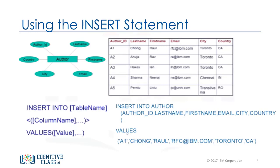To add a row with the data for Raoul Chong, we insert a row with an author_ID of A1, last name Chong, first name Raoul, email rfc@ibm.com, city Toronto, and country CA for Canada. The author table has six columns, so the INSERT statement lists the six column names separated by commas, followed by a value for each column also separated by commas.